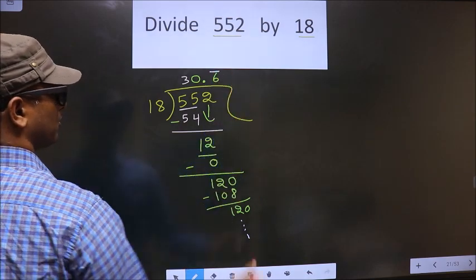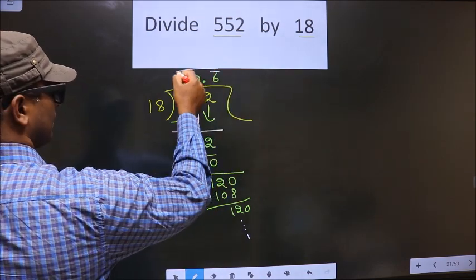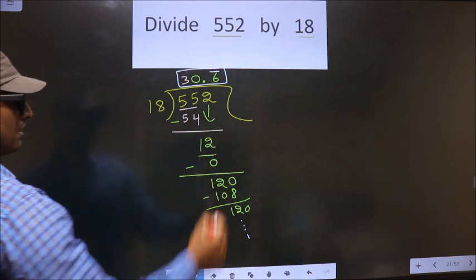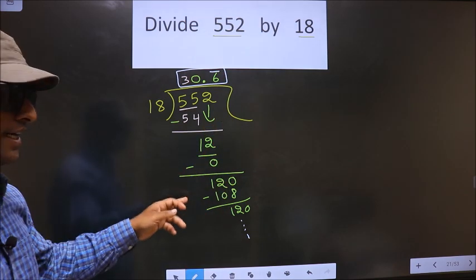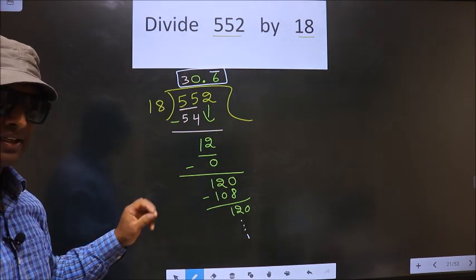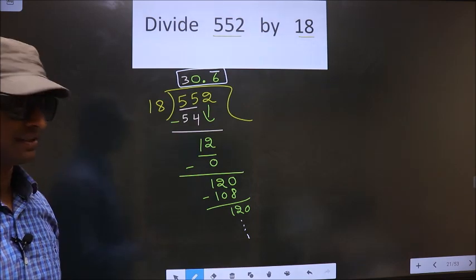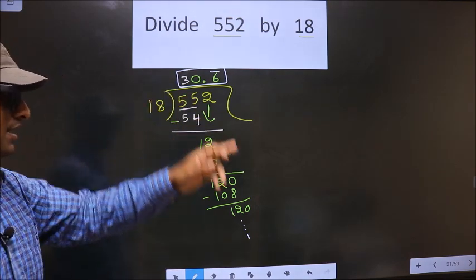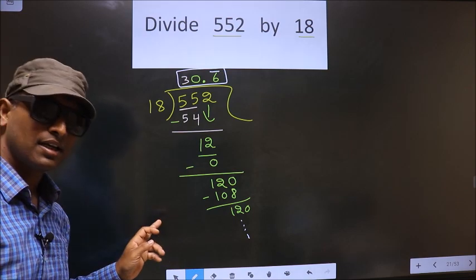So here I get 30.6 bar. This is our quotient. Did you understand the mistake? You should not do that mistake. Am I clear?